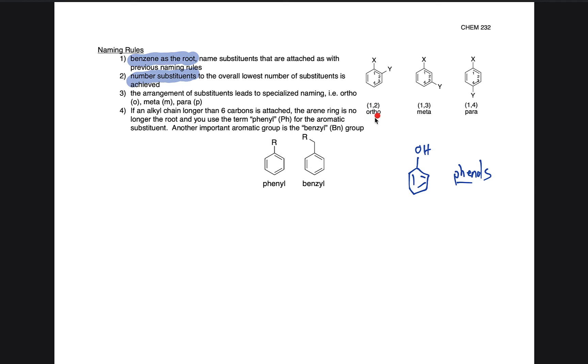We can use, like we mentioned before with phenols, ortho, meta, or para when talking about substituents. Instead of using 1,2, we can use ortho, and so on for the rest of these positions. The new piece here that we're going to be discussing: if we have an alkyl chain longer than six carbons attached, then the arene ring - which of course means the aromatic ring, these terms are sort of interchangeable - becomes the substituent, and we use phenyl for the aromatic substituent. For example, I'm going to draw an example down below.